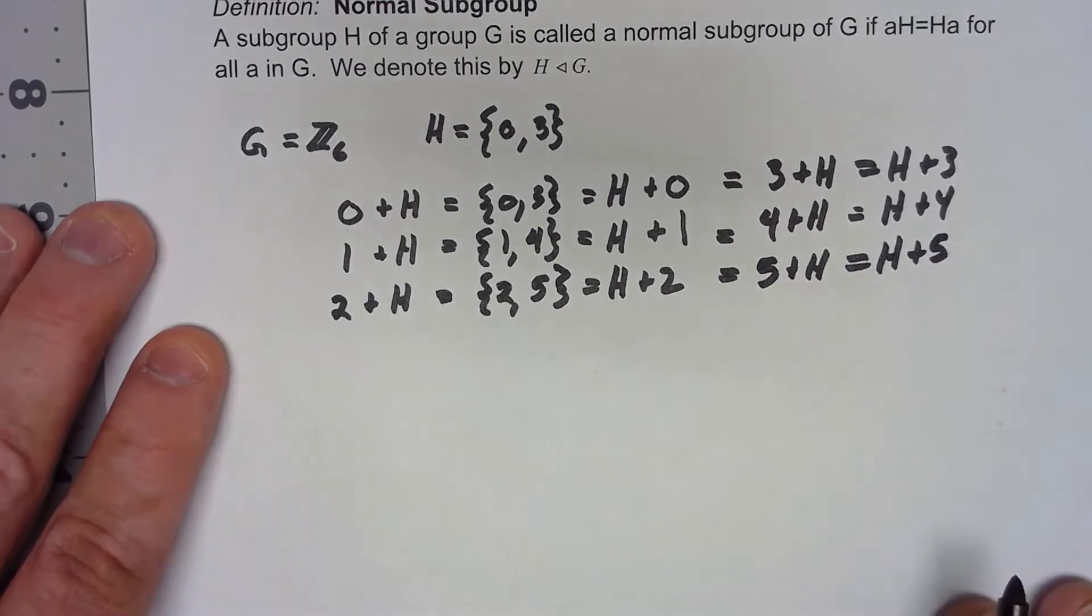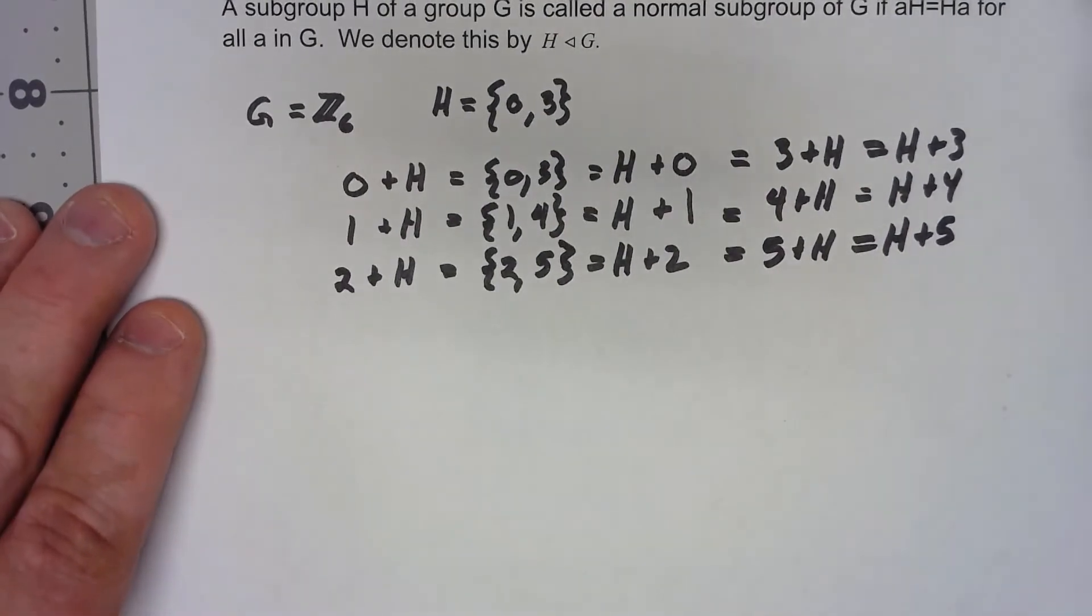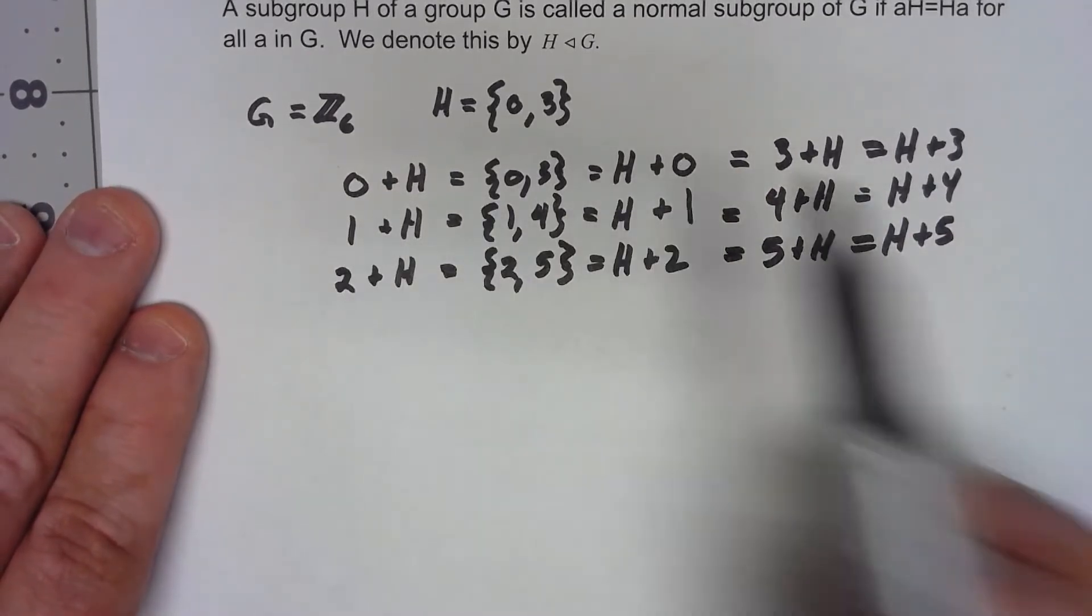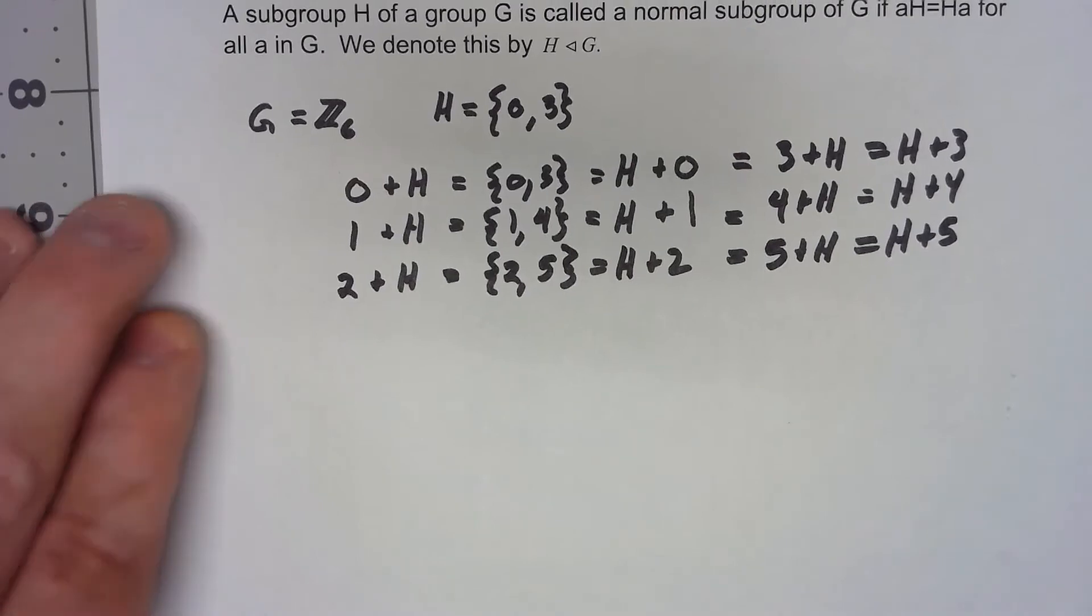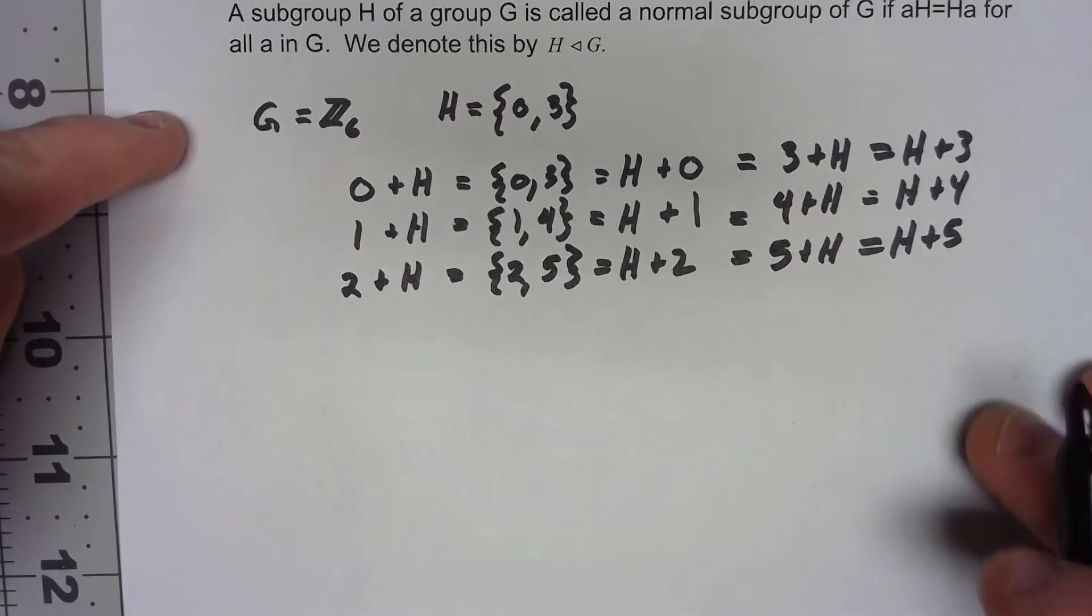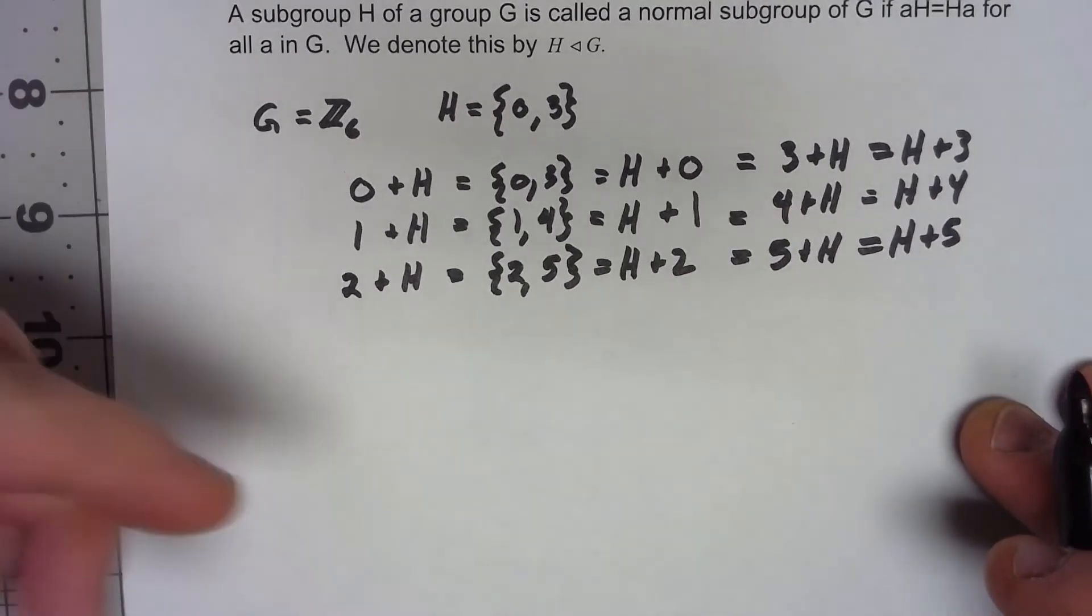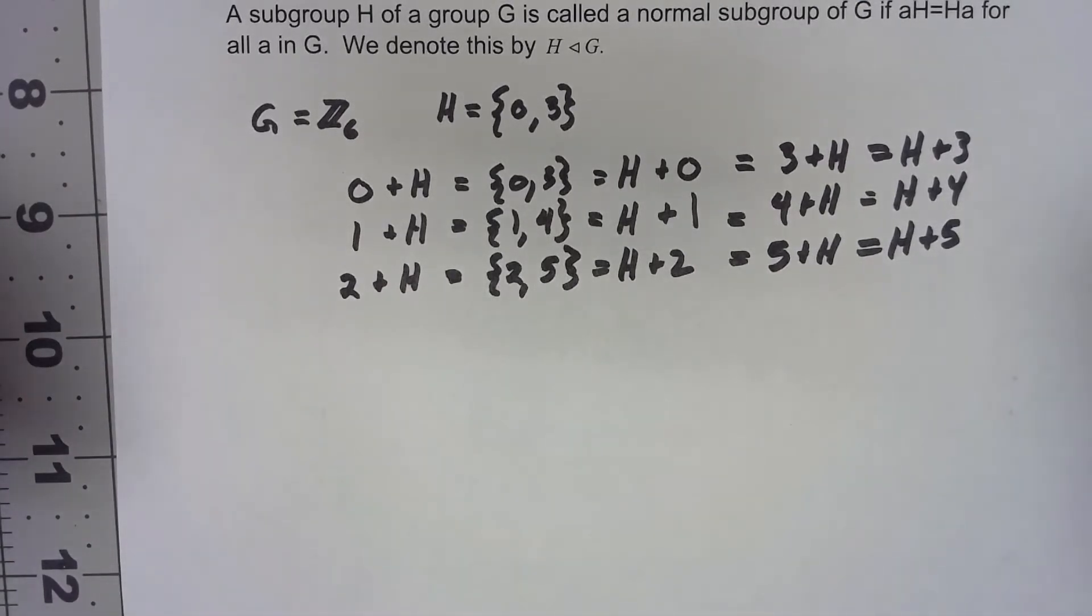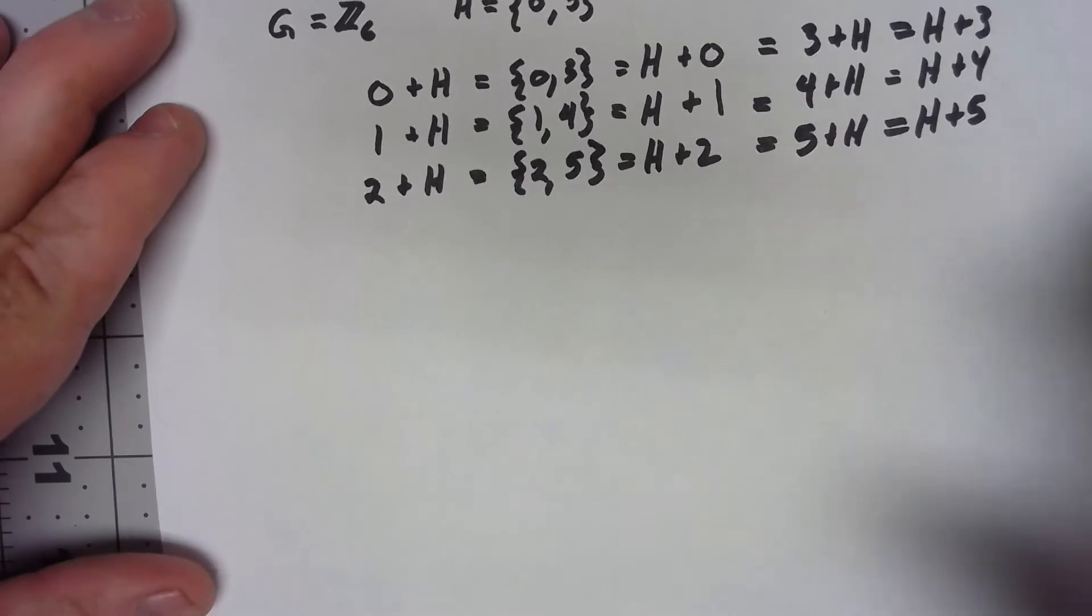This is certainly a normal subgroup. Every one of my left cosets is equal to my right coset, but that shouldn't be too surprising because this is an abelian group. Because Z6 is abelian, of course adding on the left and adding on the right is the same thing. So while this is an example of a normal subgroup, it doesn't get the interesting part. Let's take a look at a more interesting example.